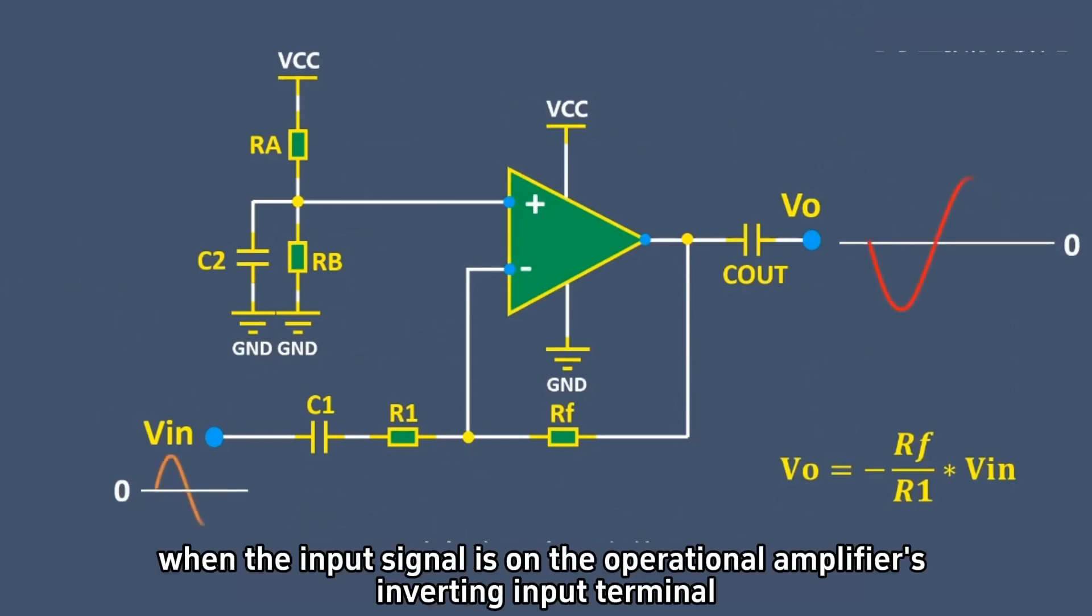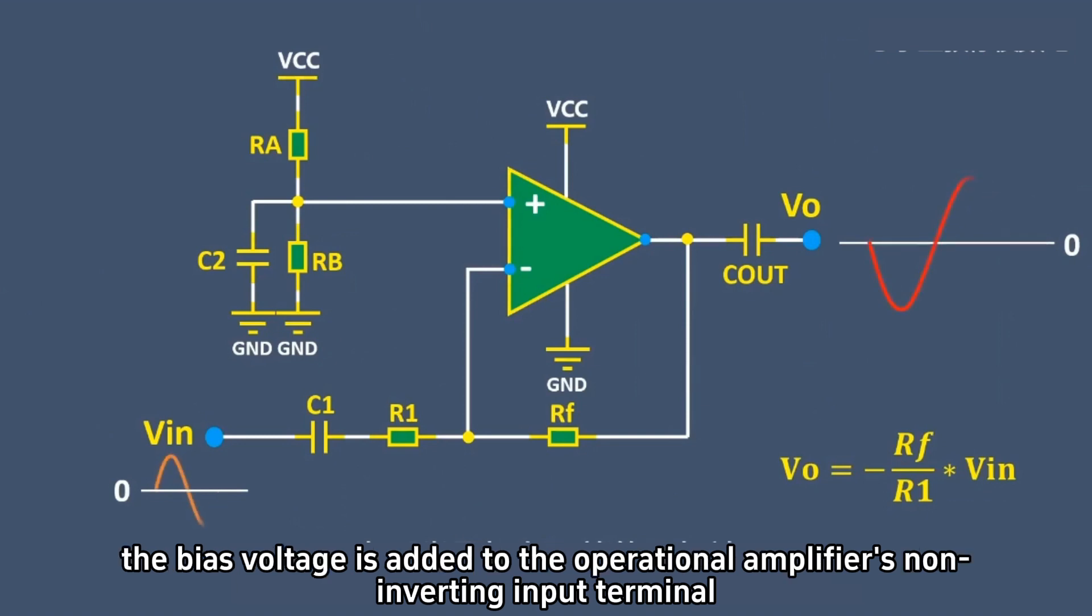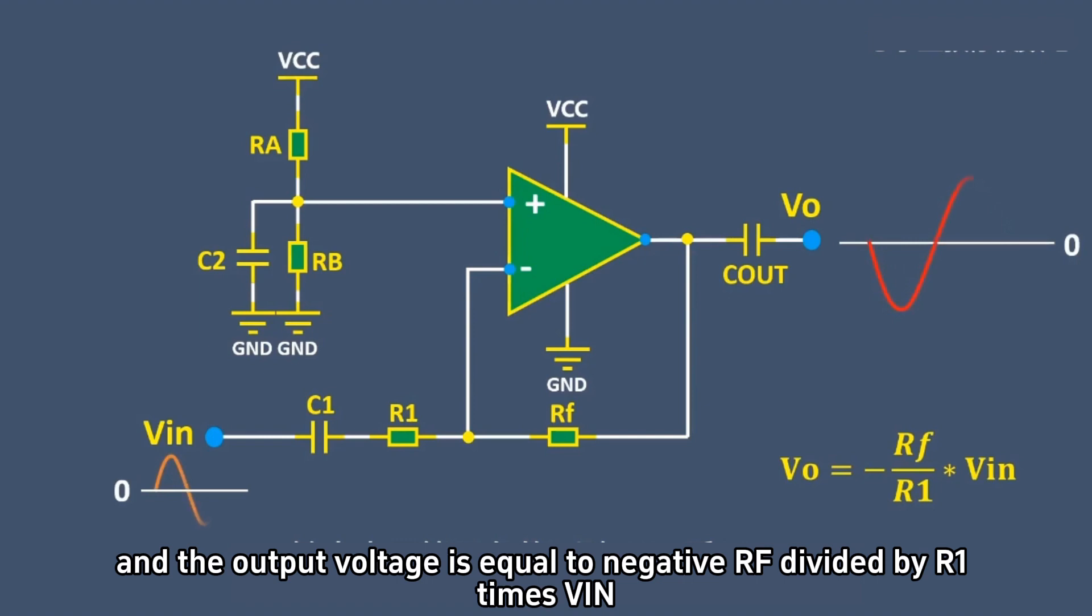Similarly, when the input signal is on the operational amplifier's inverting input terminal, the bias voltage is added to the operational amplifier's non-inverting input terminal, and the output voltage is equal to (-Rf/R1) × Vin.